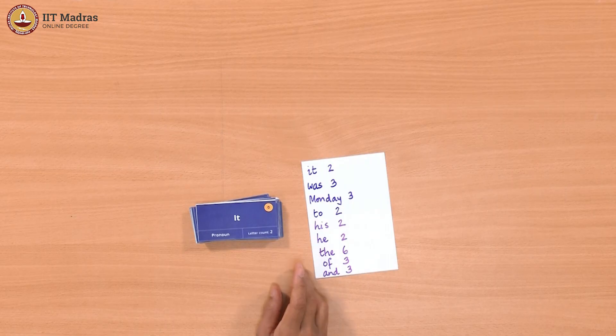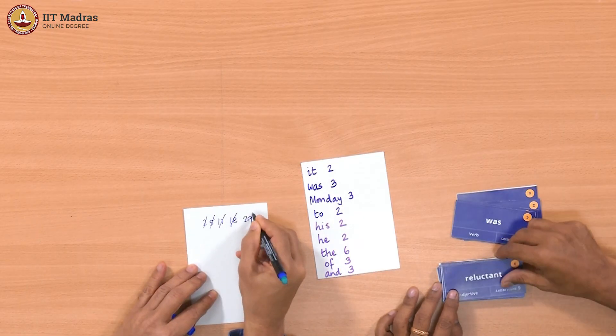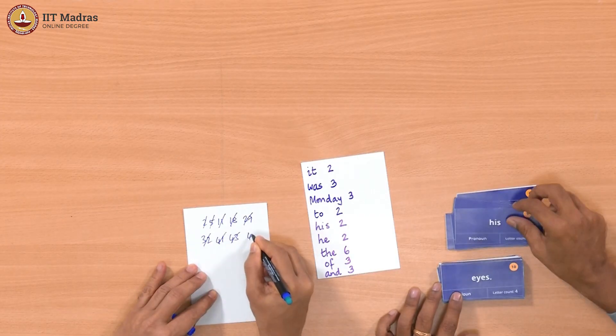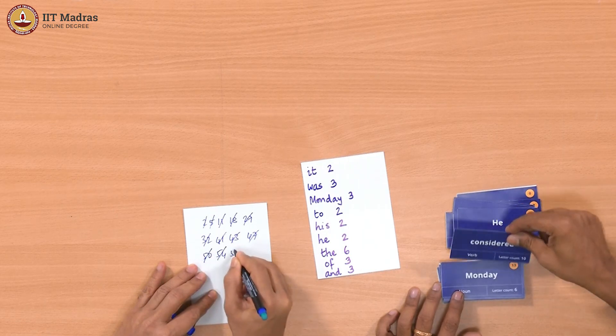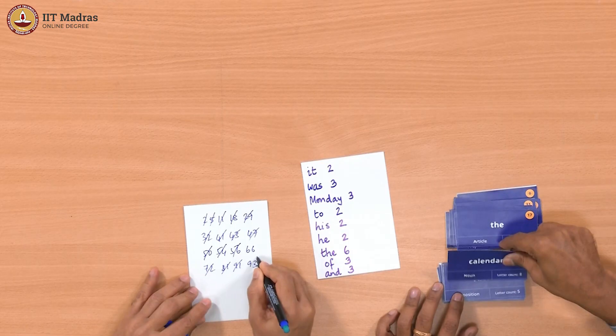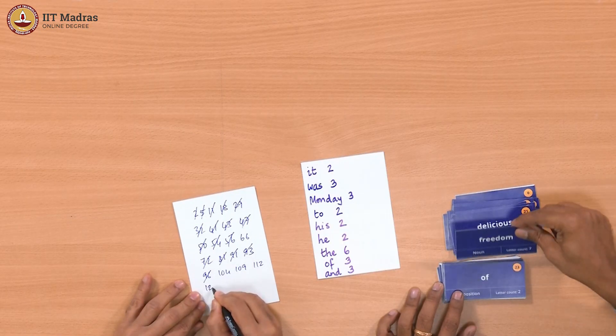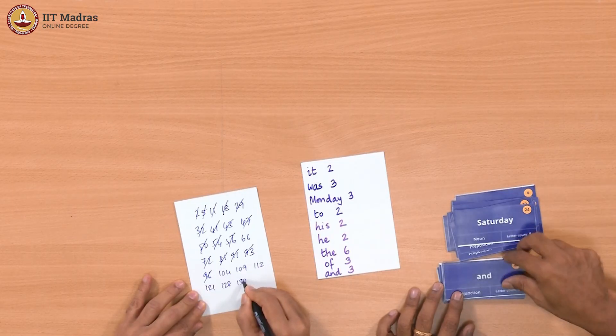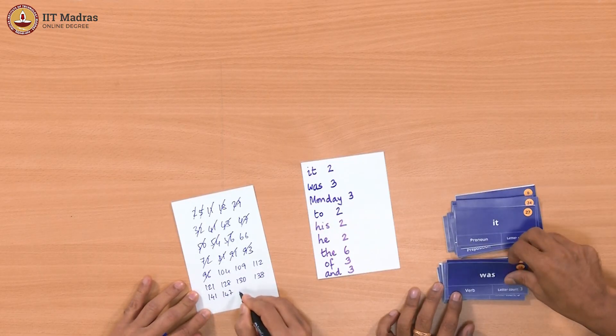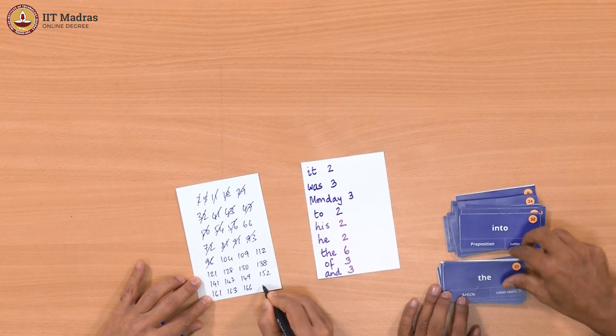Let us do this addition. We will go through again, just as standard iteration. I will just keep reading out the letter count, we will be adding it. So I start with 2, 2, 3, 5, 6, 11, 7, 18, 29, 3, 32, 9, 41, 43, 4, 47, 54, 54, 2, 56, 10, 66, 6, 72, 9, 81, 10, 91, 2, 93, 3, 96, 8, 104, 5, 109, 3, 112, 9, 121, 7, 128, 2, 130, 8, 138, 3, 141, 6, 147, 2, 149, 3, 152, 9, 161, 2, 163, 3, 166, 4, 170. Just a second, I need another card. 173.